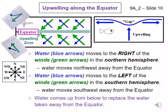Explanation of upwelling at the equator. The trade winds north of the equator are called the northeast trades and blow towards the southwest. In the northern hemisphere, water is pushed to the right of the wind. Northwest is to the right of southwest, so the northeast trades push water northwest — Ekman transport is northwest. The trade winds south of the equator are called the southeast trades and blow towards the northwest. In the southern hemisphere, water is pushed to the left of the wind. Southwest is to the left of northwest, so the southeast trades push water southwest — Ekman transport is southwest.